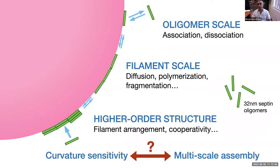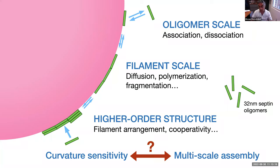We decided to study the assembly process, which proceeds in multiple steps. Assembly starts with a single oligomer binding to the membrane. Upon binding, oligomers can diffuse and connect to form larger filaments through annealing or polymerization. They can also form higher order structures. This has been observed experimentally both in vitro and potentially in vivo. We wanted to study these processes to see how each affects curvature sensitivity.